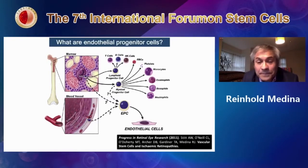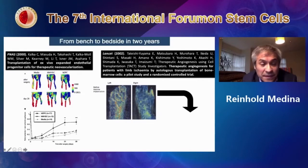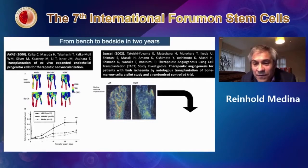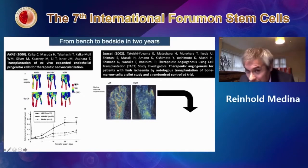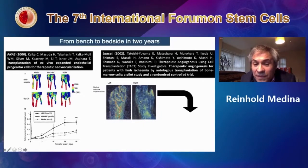These are the papers that gave rise to the field. In this paper, using the mouse hindlimb ischemia model, you can see in the Doppler that the limb is blue with no perfusion. When you inject mature endothelial cells, nothing happens, but when you inject endothelial progenitors you see reperfusion and repair of those blood vessels within four weeks. Two years after that publication, there was a first-in-man clinical trial in Japan where they showed they could rescue limbs from amputation simply by injecting these cells.